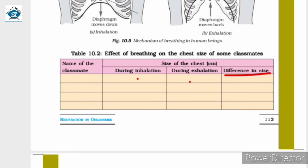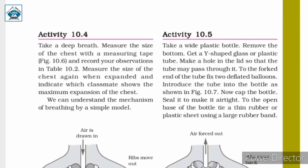It can be observed that the chest size increases while inhaling air and decreases back to normal when air is exhaled. So there is a measurable change in the size of the chest during breathing. This is followed by Activity 10.5.